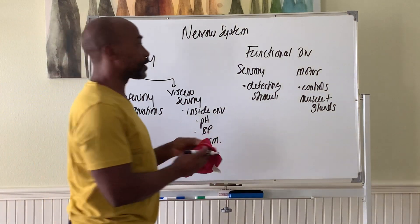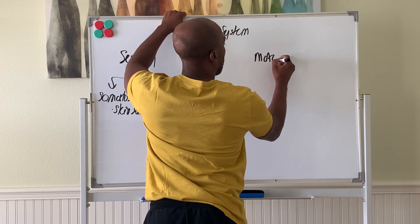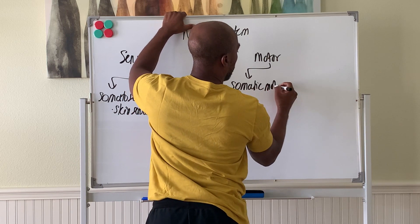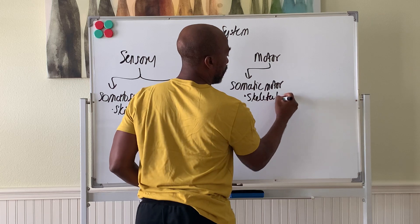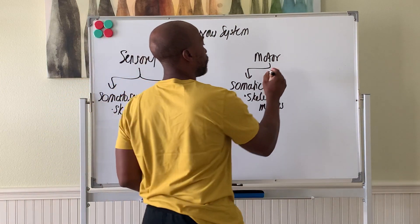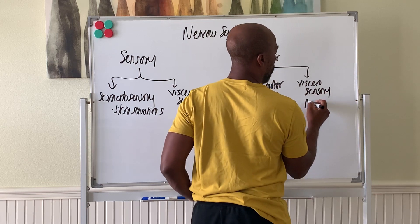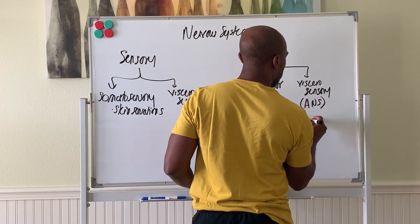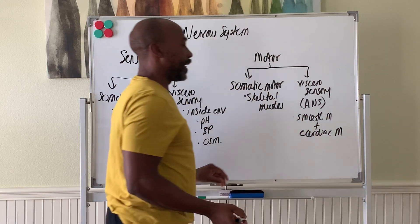For the motor side, the motor division has your somatic motor division, which controls the skeletal muscles — muscles on the bones. Then you have your autonomic nervous system, also called the ANS, which controls your smooth muscles and your cardiac muscle.